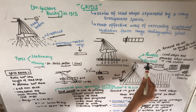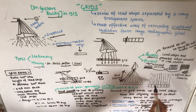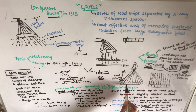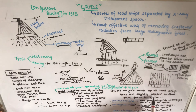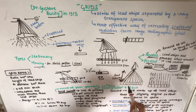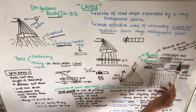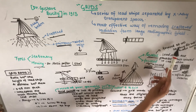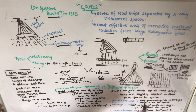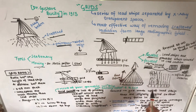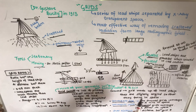In a parallel grid, the lead strips are parallel when viewed in cross-section — unlike the focused grid where strips are angled. Because the strips are parallel, they are focused at infinity; they do not converge at any point or line. This covers the four main grid types: parallel, focused, stationary, and moving.